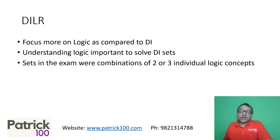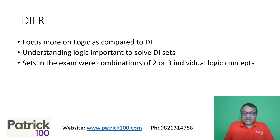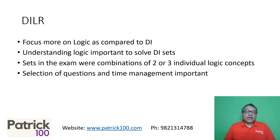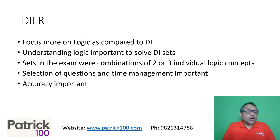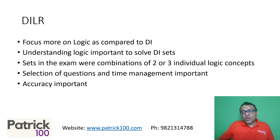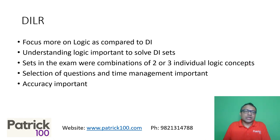If you analyze the sets that came in the exam, they were combinations of two or three individual logic concepts. So if you know individual logic concepts well, these combinations become really confusing. There's nothing new in terms of the logic questions, but it's that whatever individual concepts you already know were combined, making it confusing. Because the time was less — 40 minutes is not too much — and the number of sets were low, selection of questions became very important in DLR. One wrong selection could hamper your whole paper. Accuracy also became important because with only a few questions, even two or three wrong answers can drop your marks drastically.